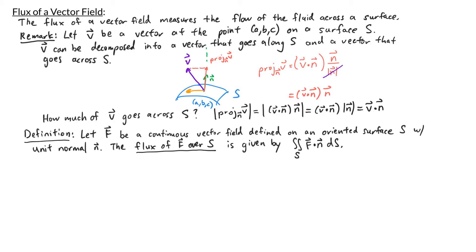We're now ready to define the flux of a vector field over a surface. Let f be a continuous vector field defined on an oriented surface S with unit normal n. The flux of f over S is given by the surface integral of f dot n. We integrate f dot n because that measures how much of f goes across the surface S, and when we integrate we are summing up the flow across every point on S.